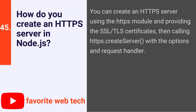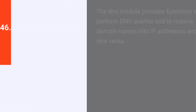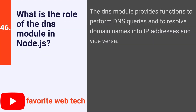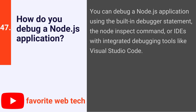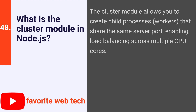How do you create an HTTPS server in Node.js? You can create an HTTPS server using the HTTPS module and providing the SSL/TLS certificates, then calling https.createServer with the options and request handler. What is the role of the DNS module in Node.js? The DNS module provides functions to perform DNS queries and to resolve domain names into IP addresses and vice versa. How do you debug a Node.js application? You can debug using the built-in debugger statement, the node --inspect command, or IDEs with integrated debugging tools like Visual Studio Code.